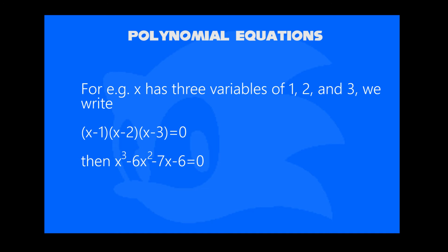Let's say x has three variables: 1, 2, and 3. We can form this as a cubic equation. First of all, write in parenthesis x minus 1, x minus 2, and x minus 3, equal to 0.